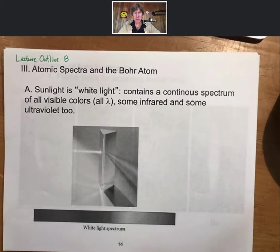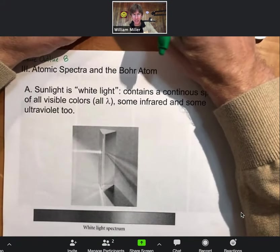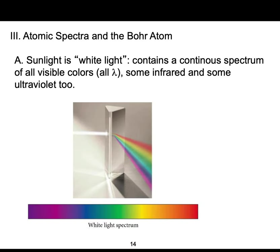Let's talk about atomic spectra and the Bohr atom. Sunlight is white light, and we're going to work our way towards the Bohr atom. White light contains a continuous spectrum of all visible colors, some infrared, and some ultraviolet. The red is at the top, the violet is down at the bottom, so ultraviolet, which we can't see, would be down there as well.